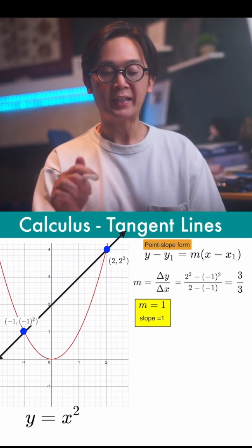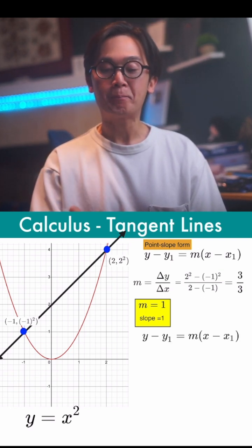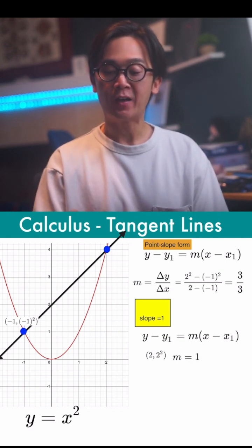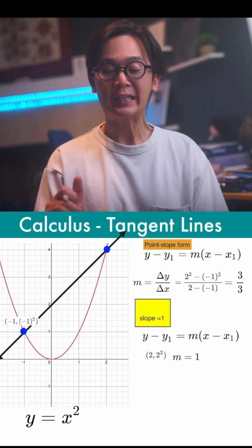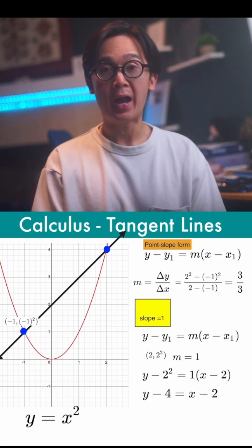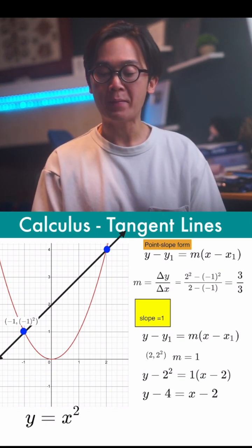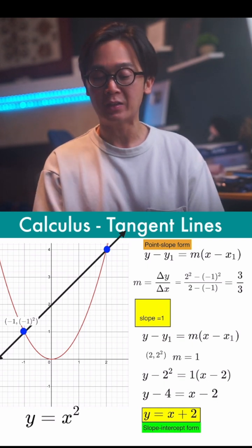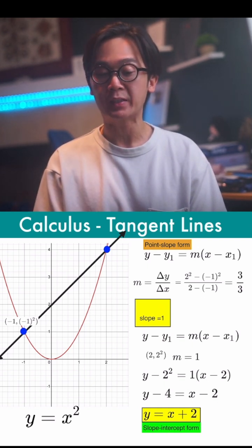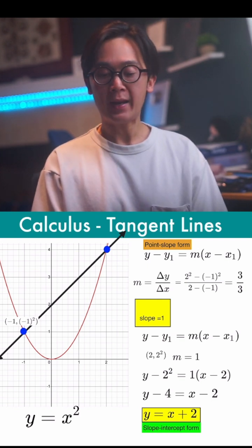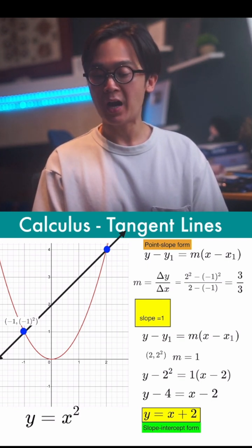With a slope of 1, picking point 2 and 2 squared, or 2 and 4, to write our point-slope form — by substitution, we'll have y minus 2 squared equals 1 times x minus 2. This is now our point-slope form. By simplifying, we'll have y minus 4 is equal to x minus 2. If we simplify further into slope-intercept form, our equation will be y is equal to x plus 2. So the equation of that secant line at points negative 1 and 1, and 2 and 4, is y is equal to x plus 2.